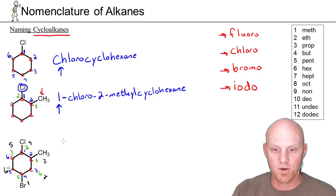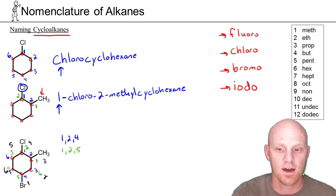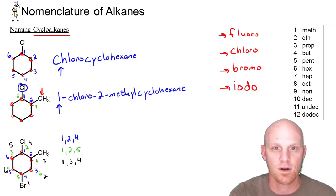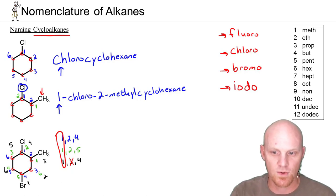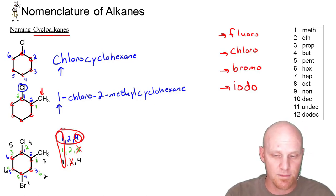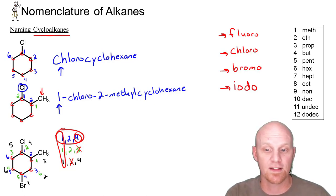These three numbering schemes give different sets of locants. The blue scheme places substituents at 1, 2, and 4. The green scheme places them at 1, 2, and 5. The black scheme places them at 1, 3, and 4. All start at 1, so we compare the second locator: blue and green both have 2, which beats black's 3. Then among blue and green, 4 beats 5, so the blue numbering wins. A common mistake is jumping to the alphabet to assign numbers, but we only use alphabet to break ties if all chain locators are exactly the same regardless of numbering — which is definitely not the case here.